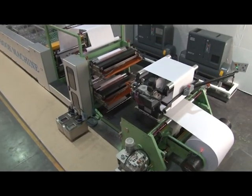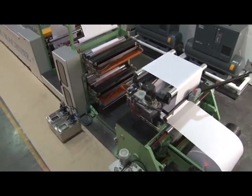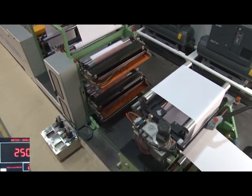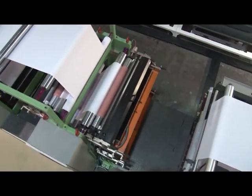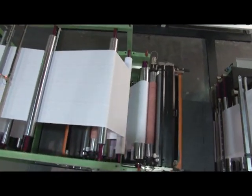The web speed of Linomatic exercise book machine is 250 meters per minute depending upon the quality and GSM of paper and the overall production depends upon the reel width, GSM of paper and pages in the notebooks.